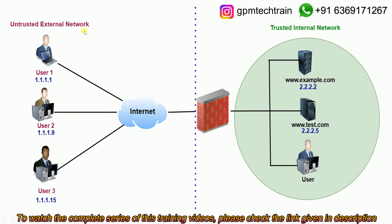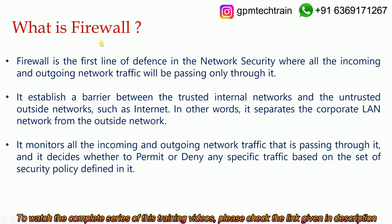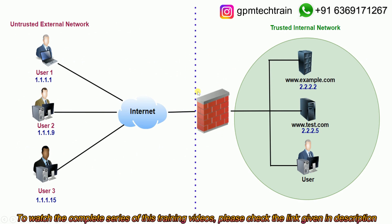We have the untrusted external network as well as the trusted internal network. By the definition from the previous slide, the firewall is the first line of defense in network security, positioned at the edge. It separates the trusted internal network and the untrusted external network — it establishes a barrier between the two.